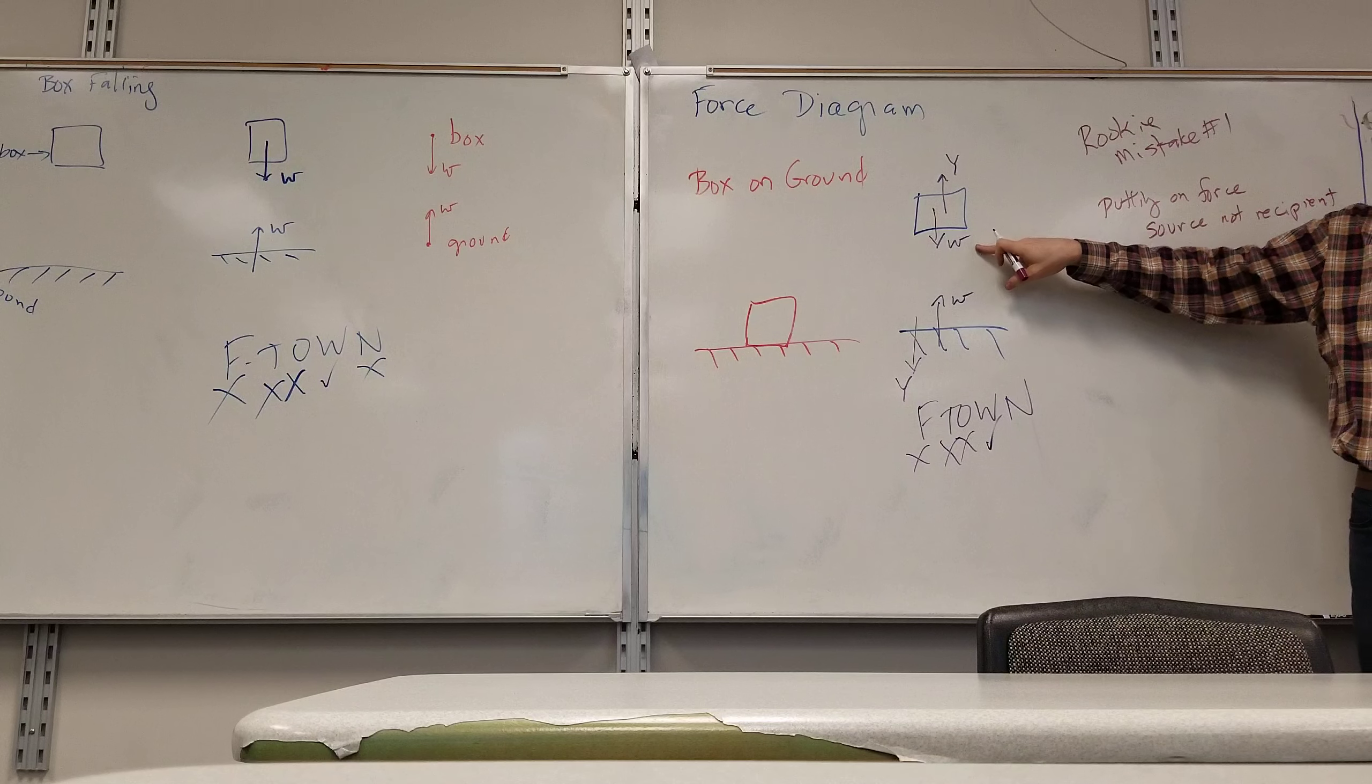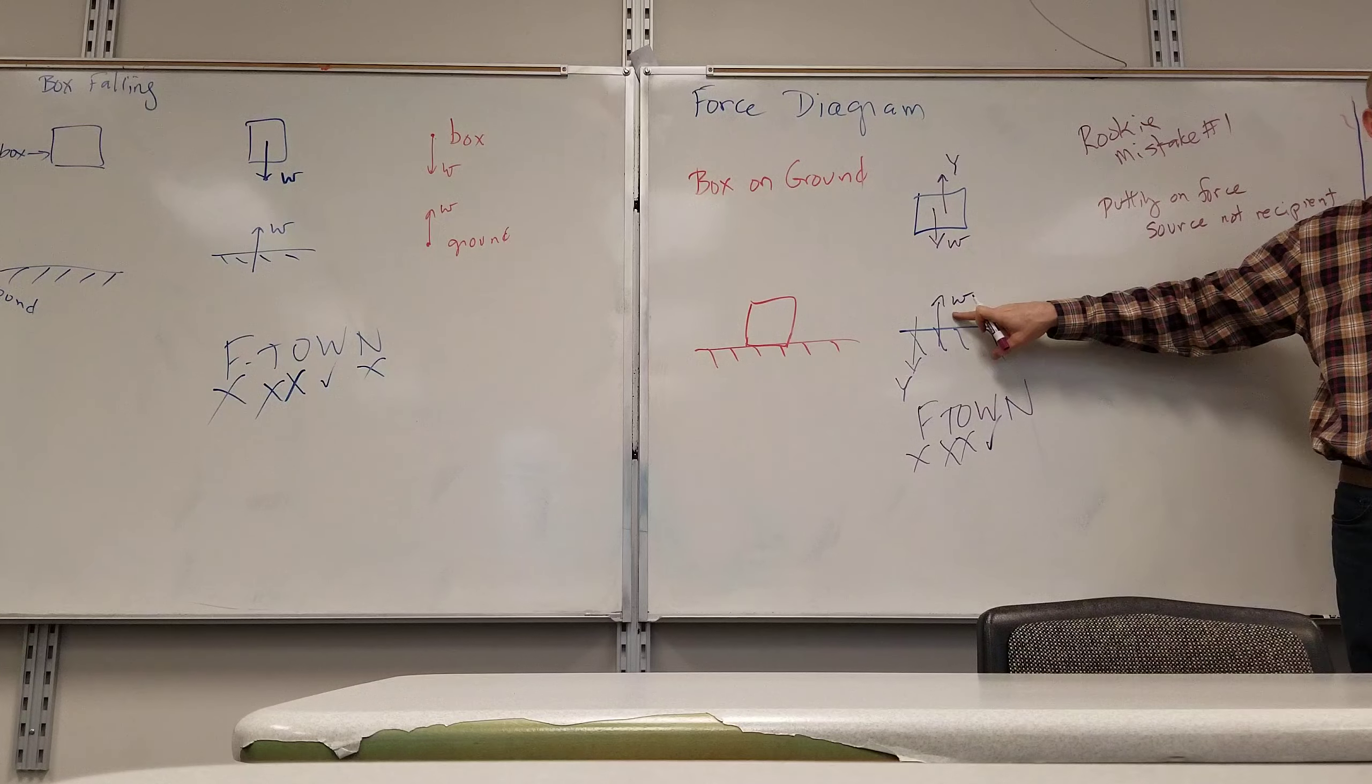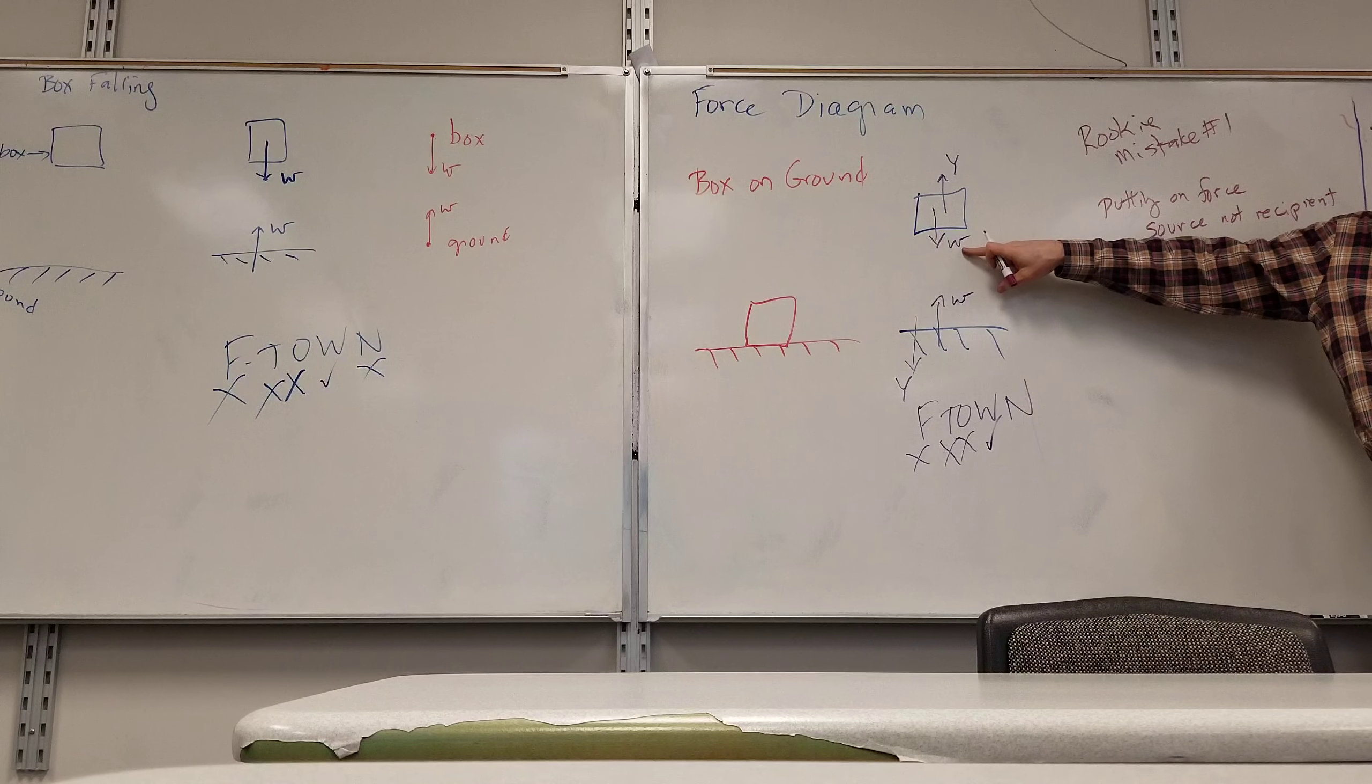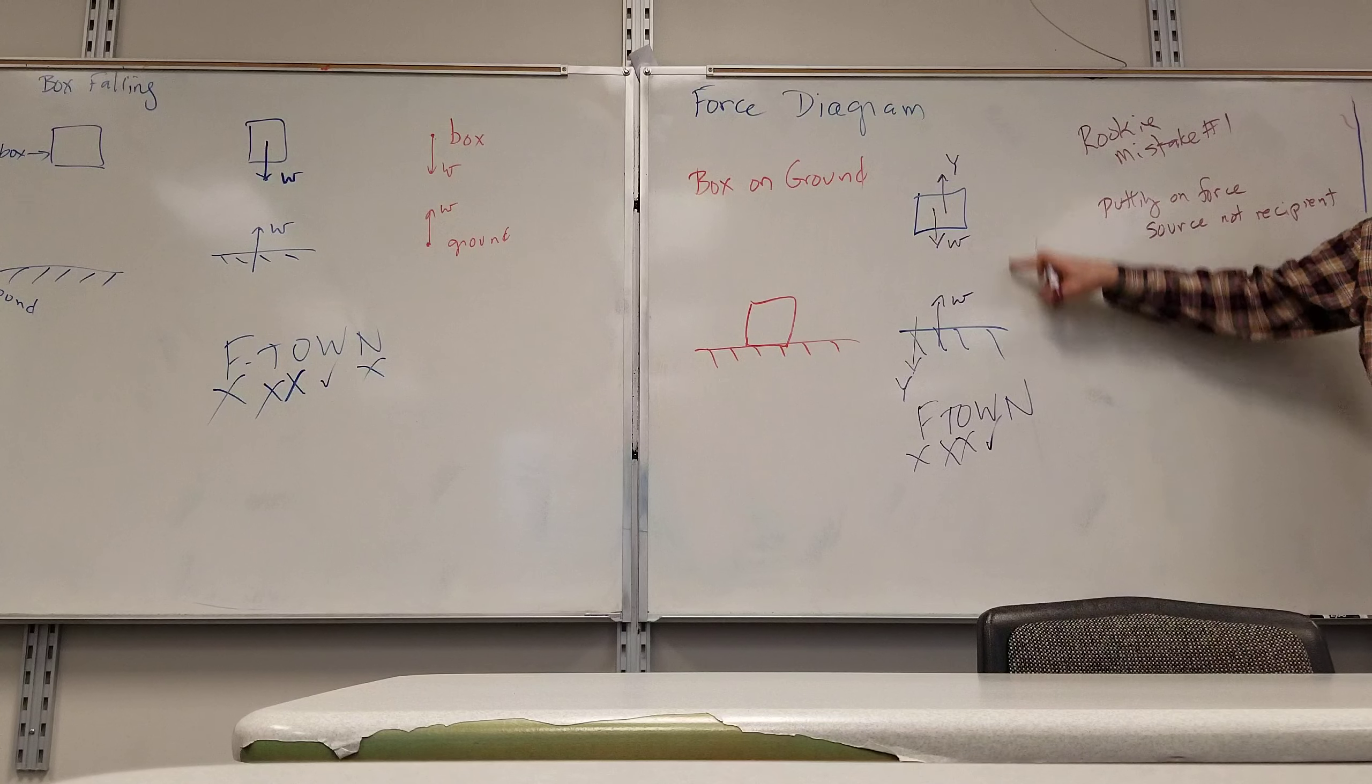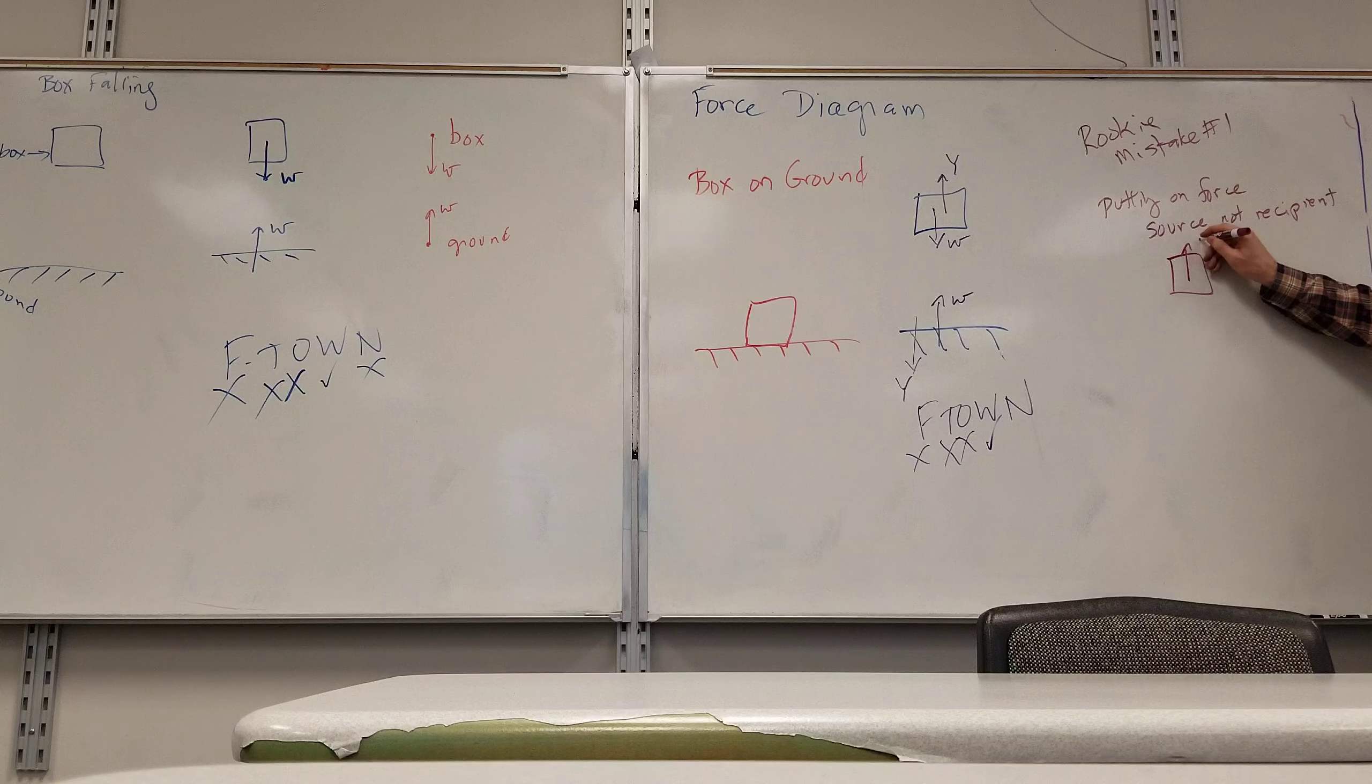This weight right here is coming from the earth. This force is coming from the earth. It is acting on the box. So you're supposed to draw it on the receiver of that force. The earth pulls down on the box, so I draw my arrow down on the box. The box pulls up on the earth, so I draw my arrow up on the earth.